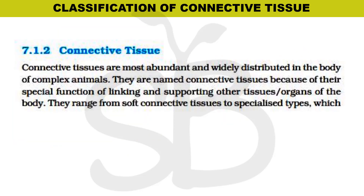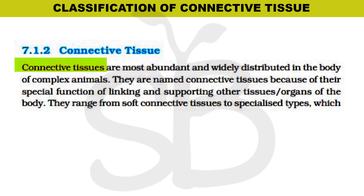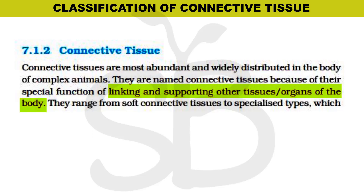In a complex animal, the most abundant tissue is connective tissue. They perform a special function of connecting and supporting different tissues and organs.